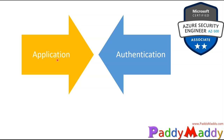We can deploy line-of-business applications to integrate with the Microsoft identity platform to provide secure sign-in and authorization for our services and users. Users can use existing AD credentials to access these applications — no more secondary logons. Microsoft identity platform provides OAuth 2.0 authorization.